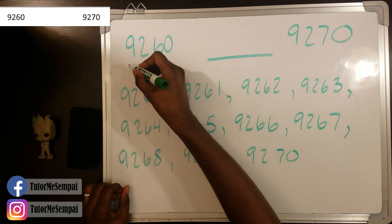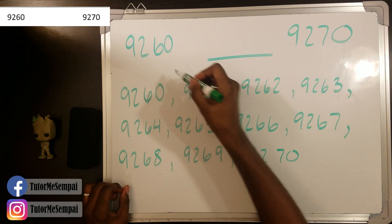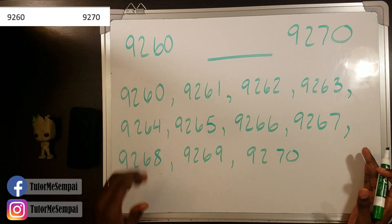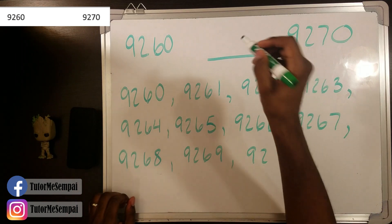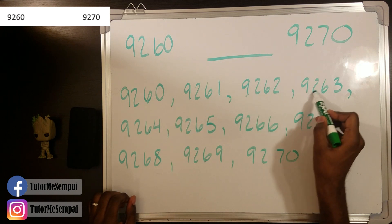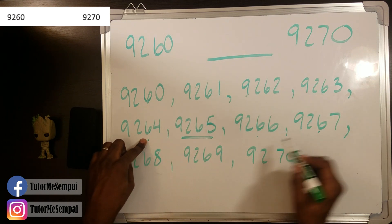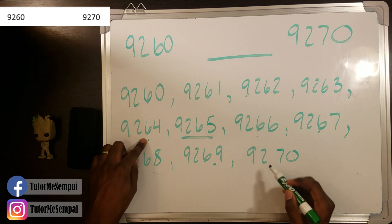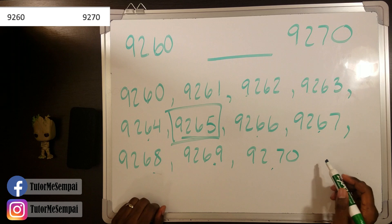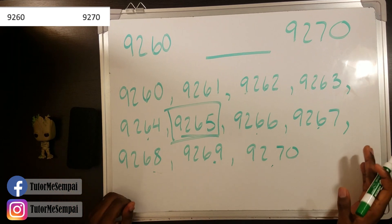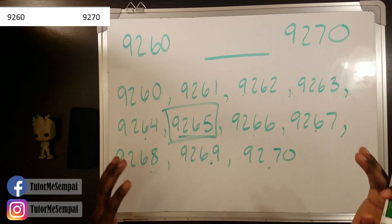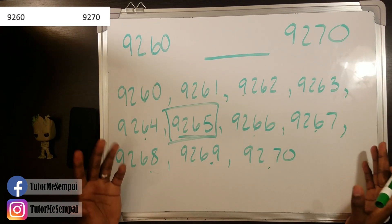If you were to write out all the numbers starting from this one here up to this one here, like I did in this example, then you would see that the middle number — the midpoint — is just one, two, three, four, five from each end. So this would be the middle number, right? And you can always just write it out. But sometimes the gap is just way too big and this is going to take up a lot of space.